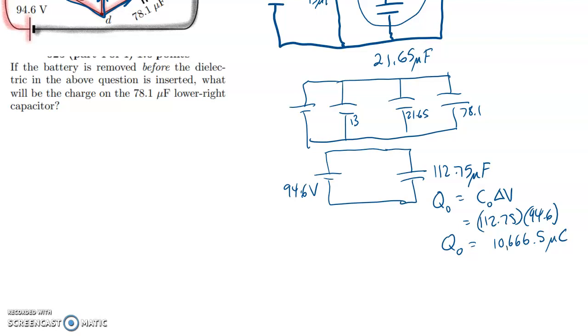So let me say again that when we remove the battery, this is still the total amount of charge. And the reason for that is the charge, once the battery's gone, doesn't have anywhere else to go. It's trapped in the circuit.